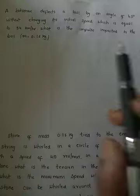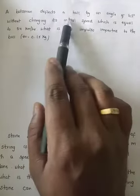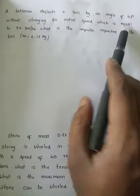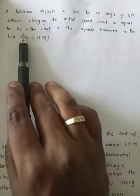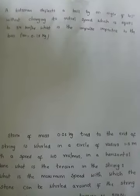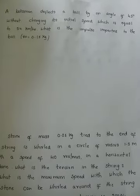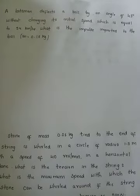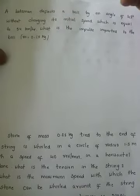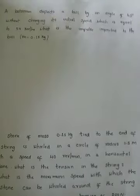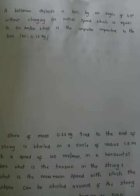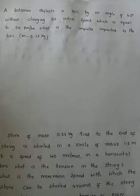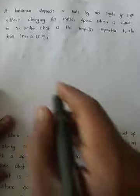The first question is: a batsman deflects a ball by an angle of 45 degrees without change in its initial speed, which is equal to 54 kilometers per hour. What is the impulse imparted to the ball?